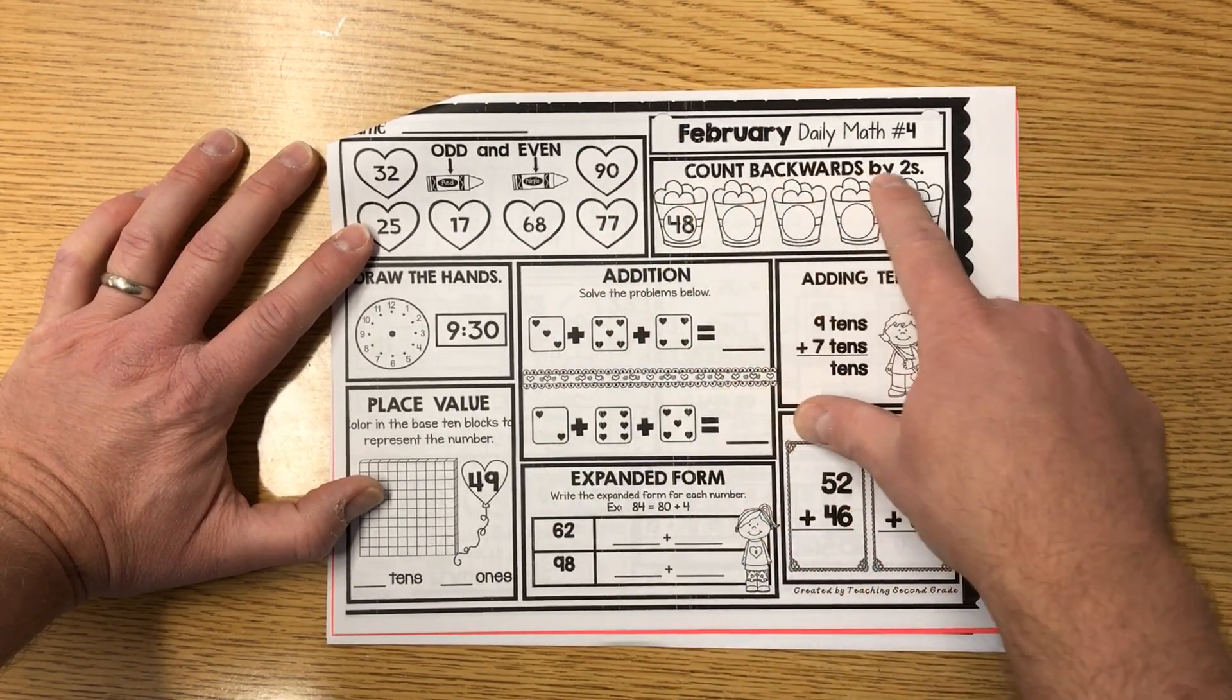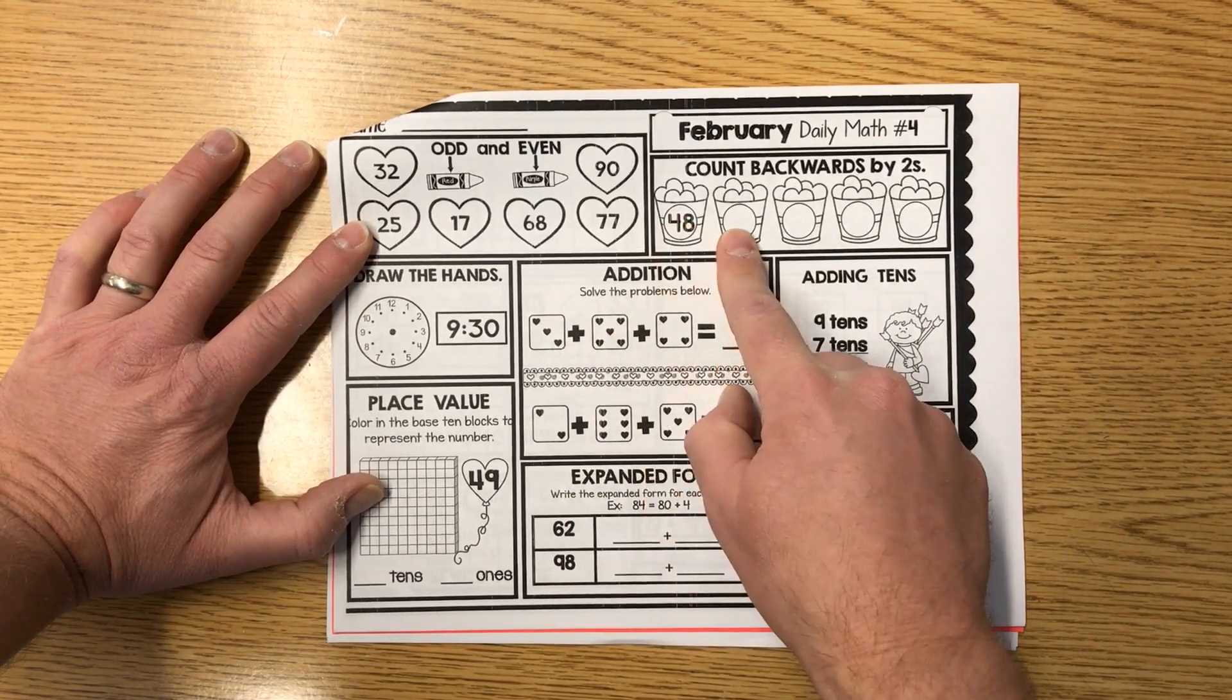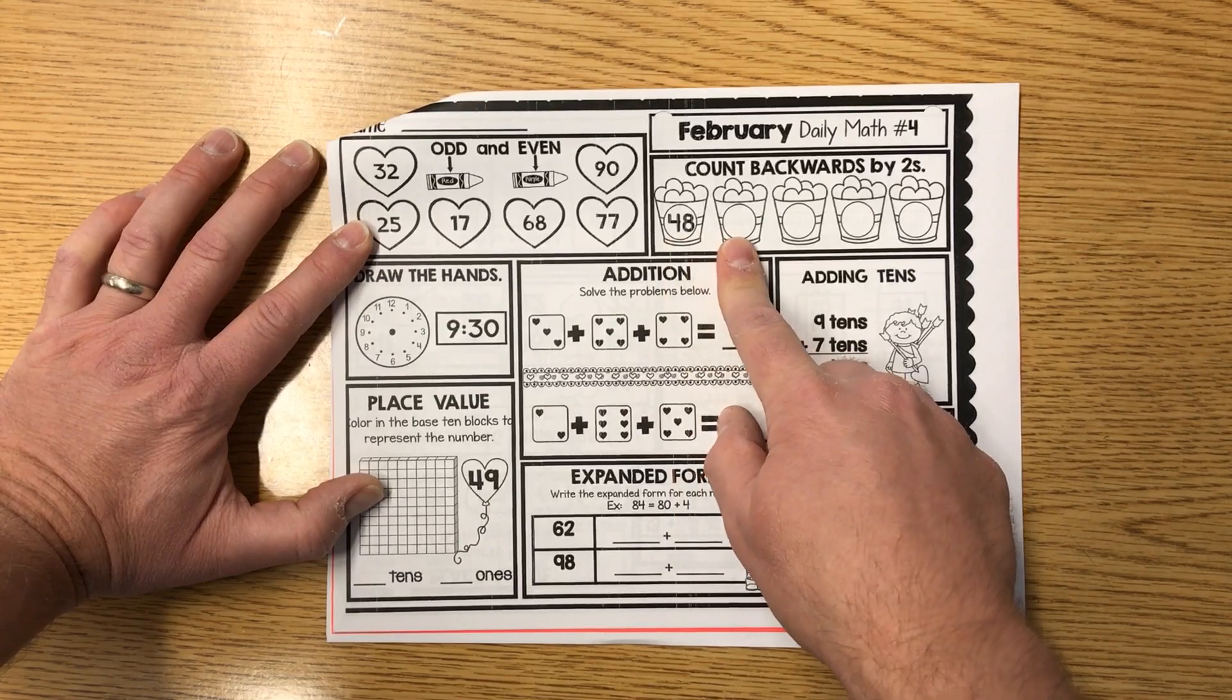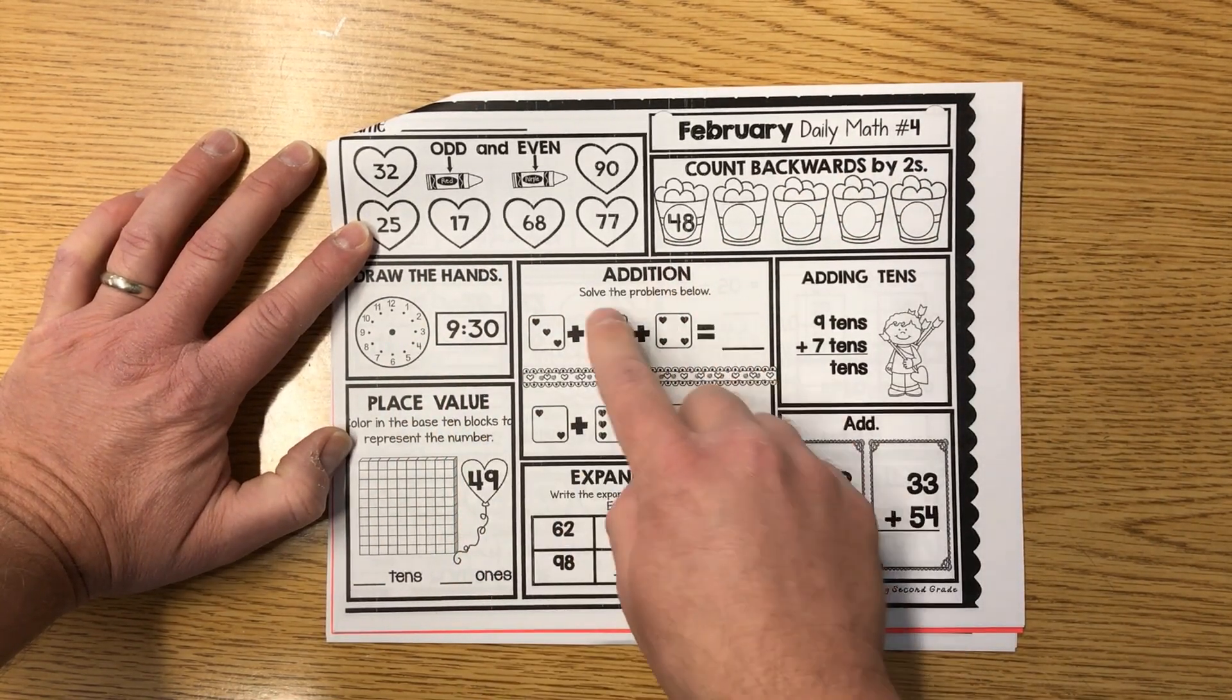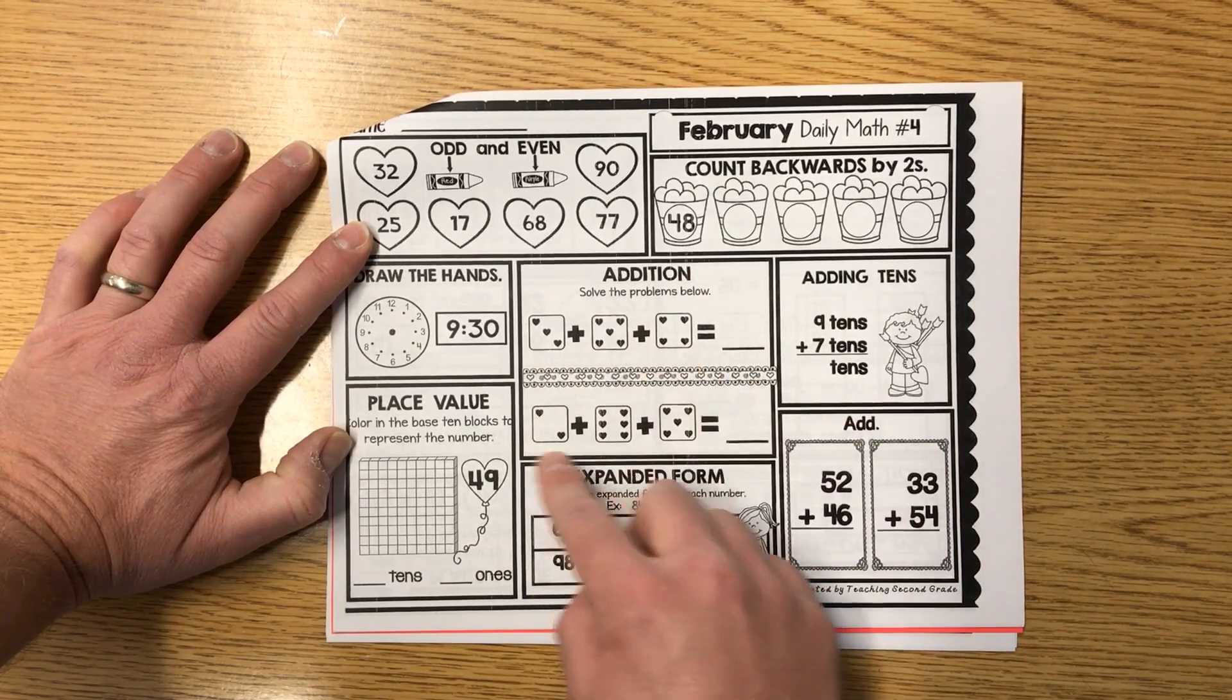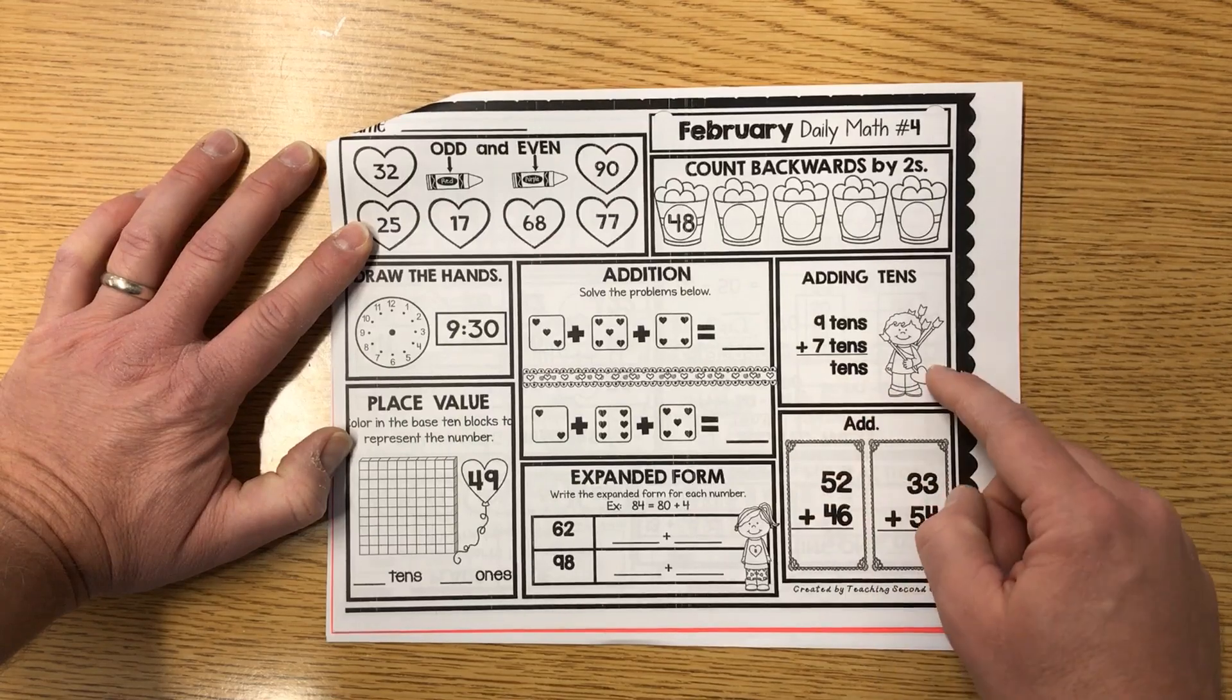Count backwards by twos. Here it says backwards, it's going to the right. They want you to go backwards by twos, like 48, 46. You're gonna count down. Draw the hands of the clock here for 9:30. Addition, solve the problems below. Cool, write your sums at the end. Adding tens, and up those tens for the Cupid boy there.